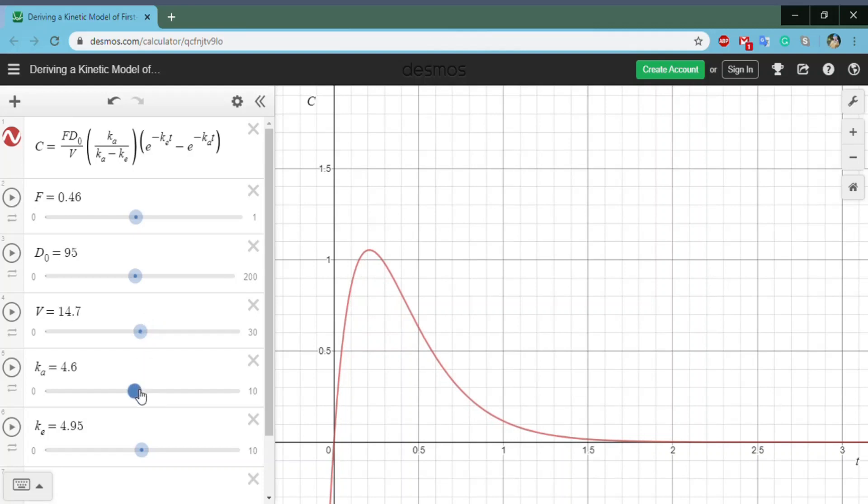KA and KE, these two are the interesting ones. KA, as you increase your absorbing rate constant, what you're doing is you're going to be shifting that curve more and more to the left. You're making that initial absorbing rate a lot higher.